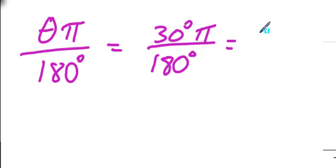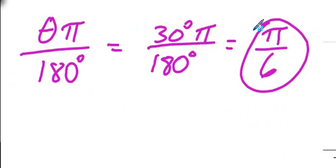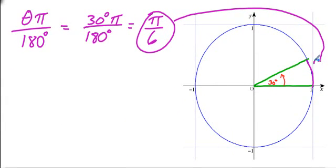And obviously, through simplification, that simply just comes down to being π over 6. So this particular arc length is equivalent to π over 6. That's how we utilize the formula.